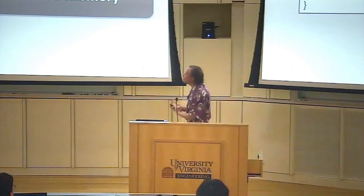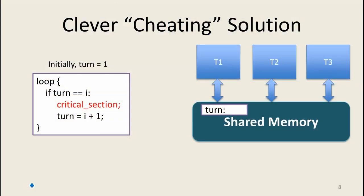This is the clever cheating solution — the solution that actually satisfies the way I worded it, which one of the teams came up with last class. We're going to use the shared memory to have some variable we'll call turn. Initially turn is going to be 1. The value of turn tells you which thread gets a chance to run. These threads have numbers — thread 1. There's a variable within the thread code that tells it what its identity is. So if we have this turn variable, we can make our loop.